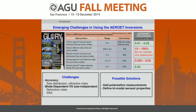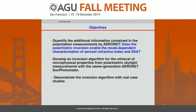One solution to address these challenges is to add more information to the retrieval. We propose adding polarization measurements and defining bimode aerosol properties in our inversion. The objective is to quantify how much information is contained in polarization measurements and how much better retrieval can be achieved. Specifically, we want to answer: can polarimetric inversion enable mode-dependent retrieval of aerosol refractive index and single scattering albedo? We will develop a new retrieval algorithm and demonstrate it with real case studies.